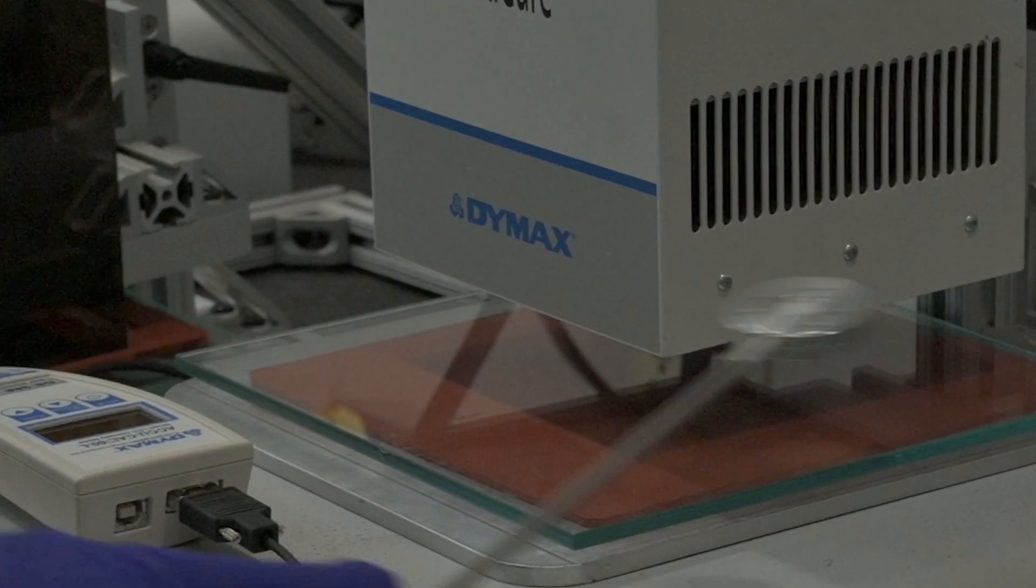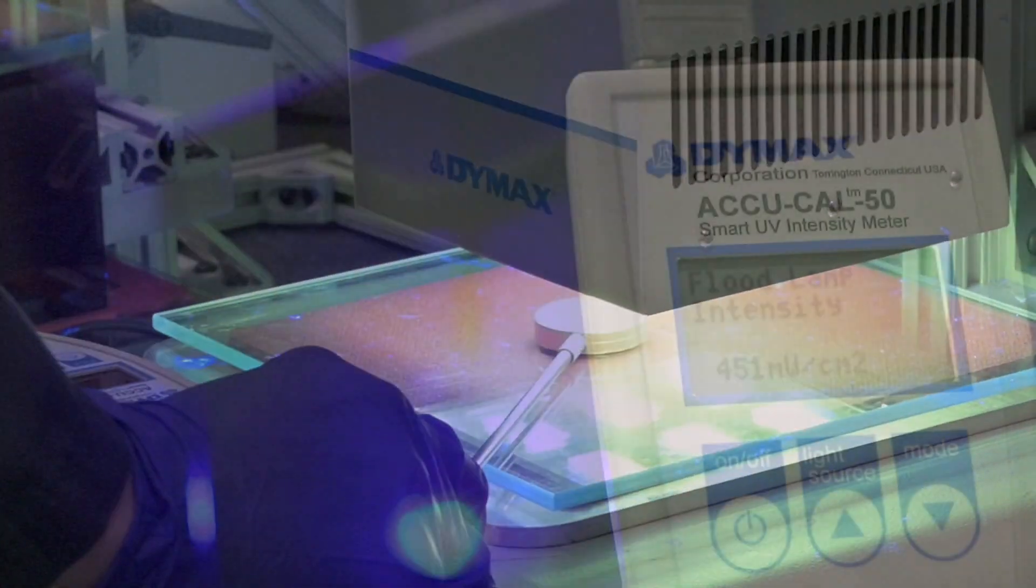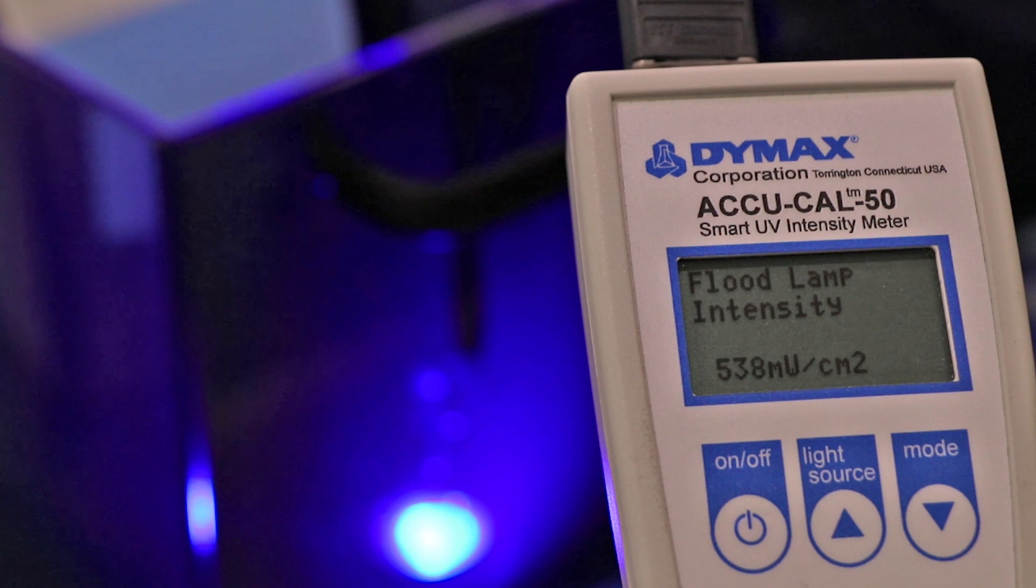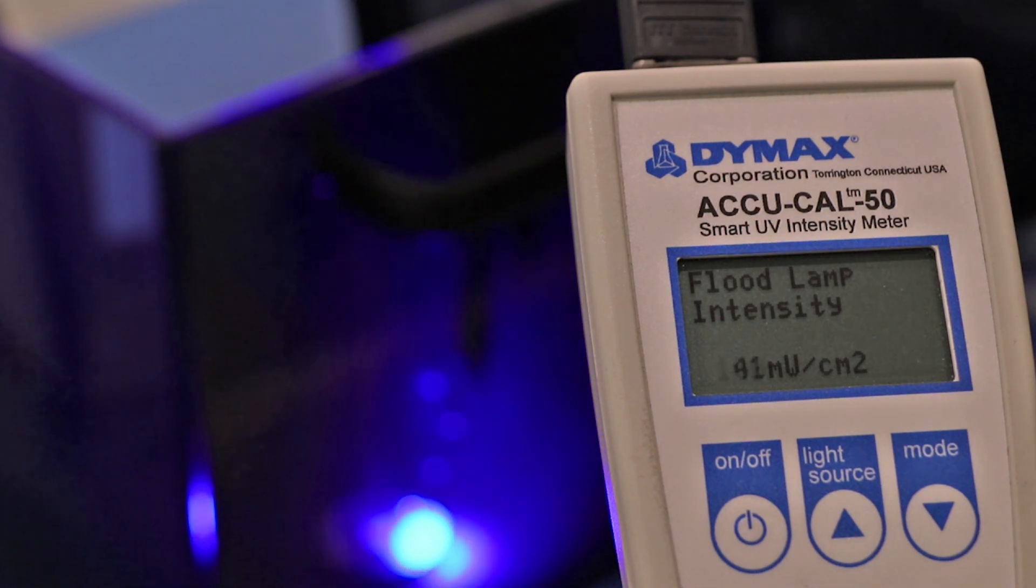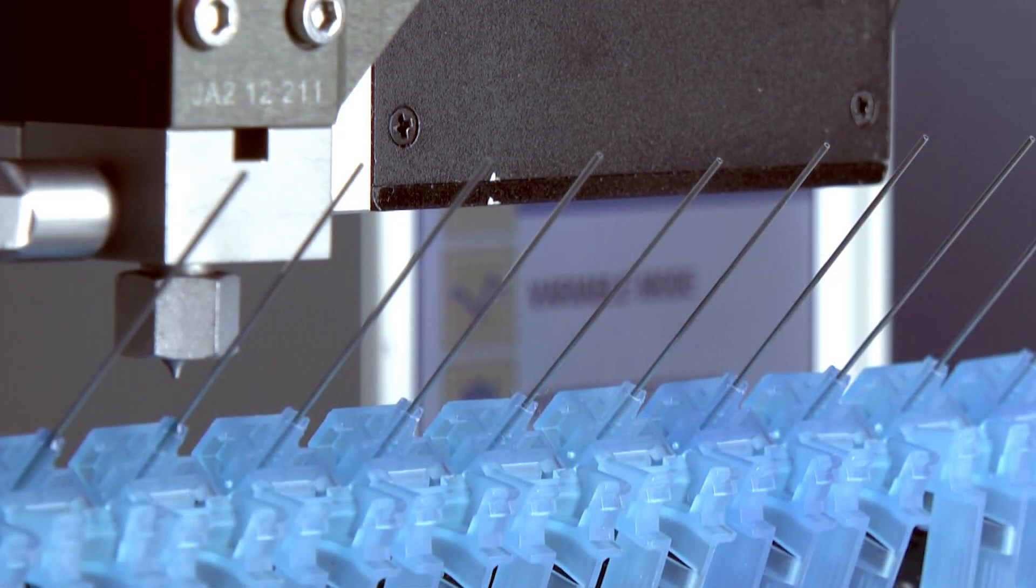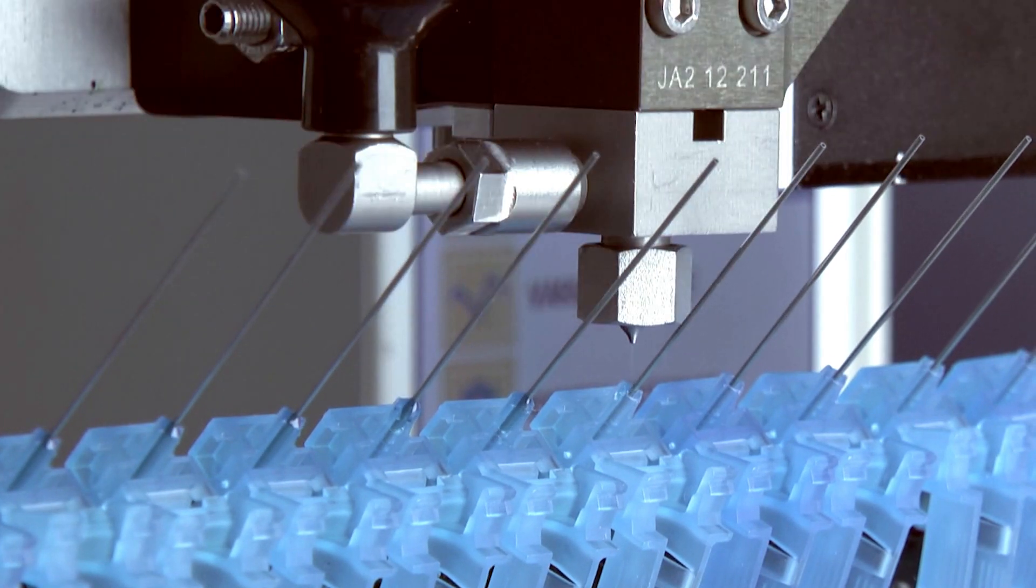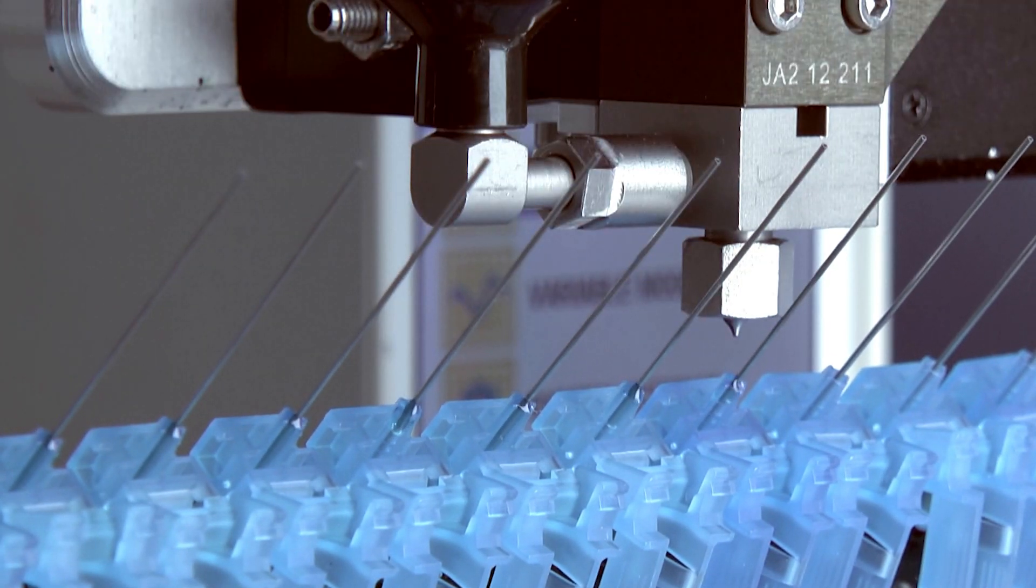A radiometer or dispensing meter can help to monitor and maintain a light curing process. Radiometers measure UV visible light transmission through transparent and translucent substrates and the intensity emitted by light curing systems. Dispensing meters regulate the amount of adhesive dispensed onto components. Both types of equipment can help to maintain a validated process.